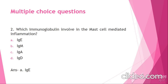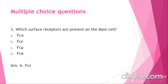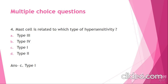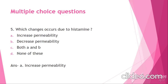Which surface receptors are present on mast cells? Options: Fc-alpha, Fc-epsilon, Fc-mu, or Fc-delta? The correct answer is Fc-epsilon. Mast cells are related to which type of hypersensitivity reaction? Options: Type 3, Type 4, Type 1, or Type 2? The correct answer is Type 1. Which changes occur due to histamine? Options: increase in permeability, decrease in permeability, both, or none? The correct answer is increase in permeability.